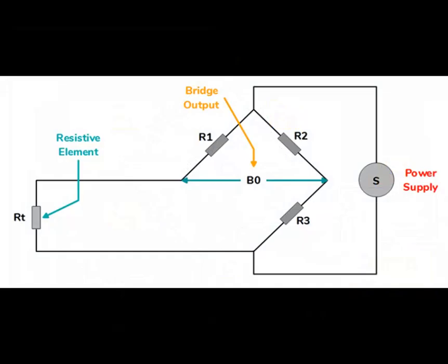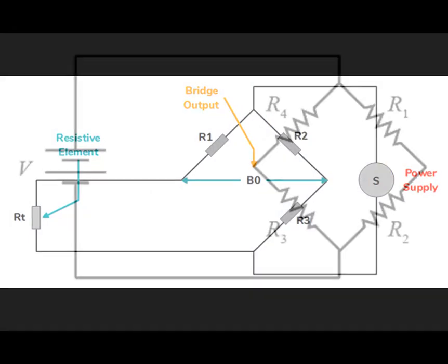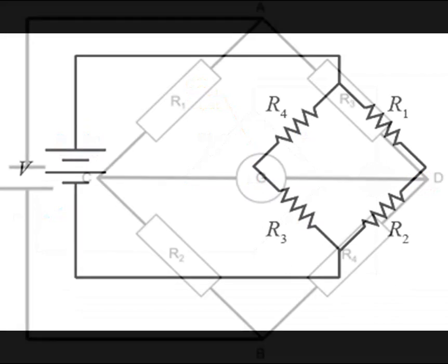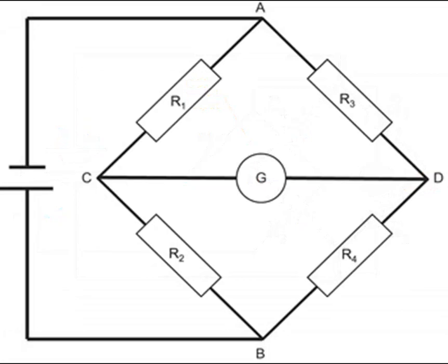Here's a basic explanation of how a Wheatstone Bridge Circuit works. The circuit consists of four resistors connected in a diamond-shaped configuration with a power source, typically a battery, and a galvanometer, a device used to measure small electric currents, connected across the opposite corners of the diamond.